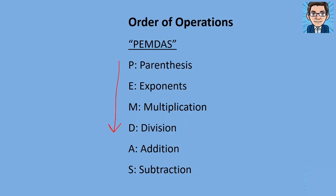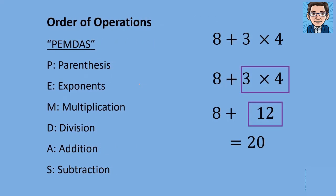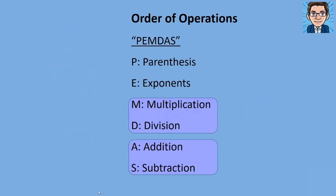Parentheses are the first thing we do. Looking back at that first example, based on PEMDAS we would do multiplication before addition — so we do 3 times 4 first, then add it to 8, giving us the correct answer of 20. With PEMDAS we have six operations but only four levels, because multiplication and division are at the same level, and addition and subtraction are at the same level. Some people make the mistake of doing multiplication before division because M comes before D in the acronym, but remember: first parentheses, then exponents, then multiplication and division together, then addition and subtraction together.